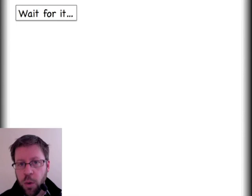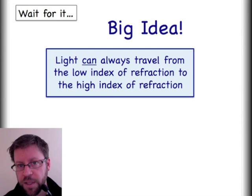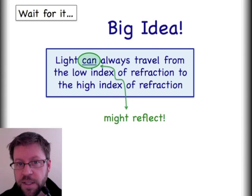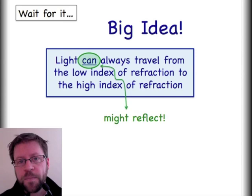In the first video we talked about how you can travel from a low index refraction into a high index refraction. You will always be able to do that—light always has a chance, a probability of penetrating into the high index of refraction material and then refracting, bending at that interface. I use the word 'can' in this situation because it's not required to do that. There's also a probability that when it hits the new interface it's going to reflect.